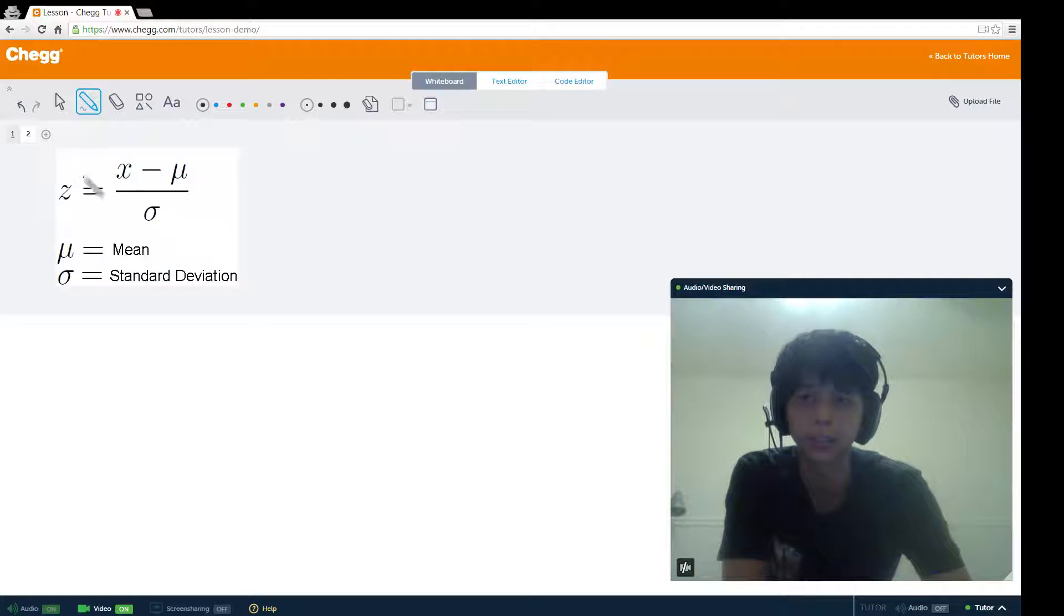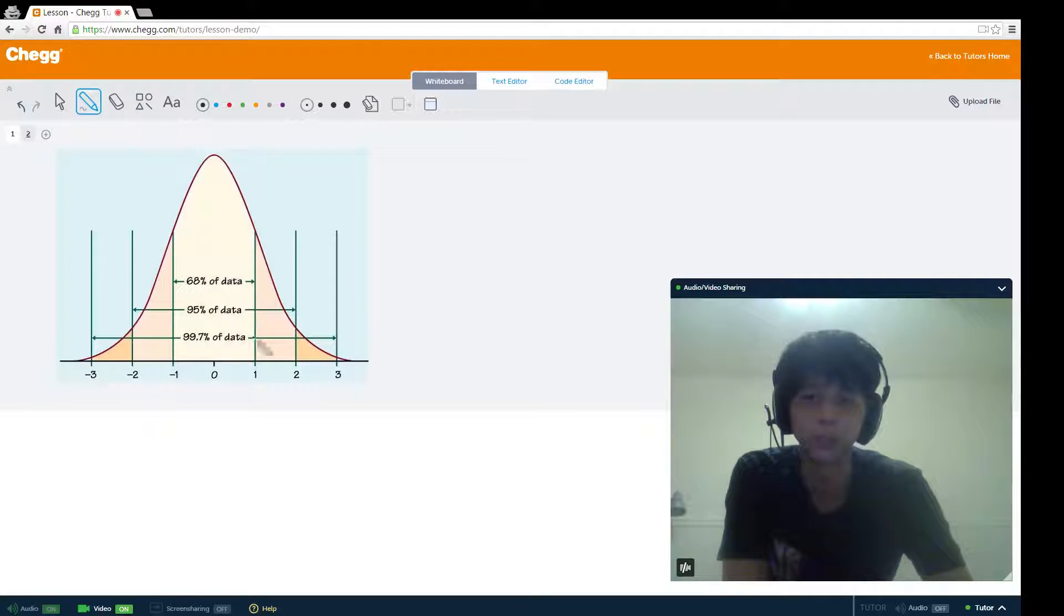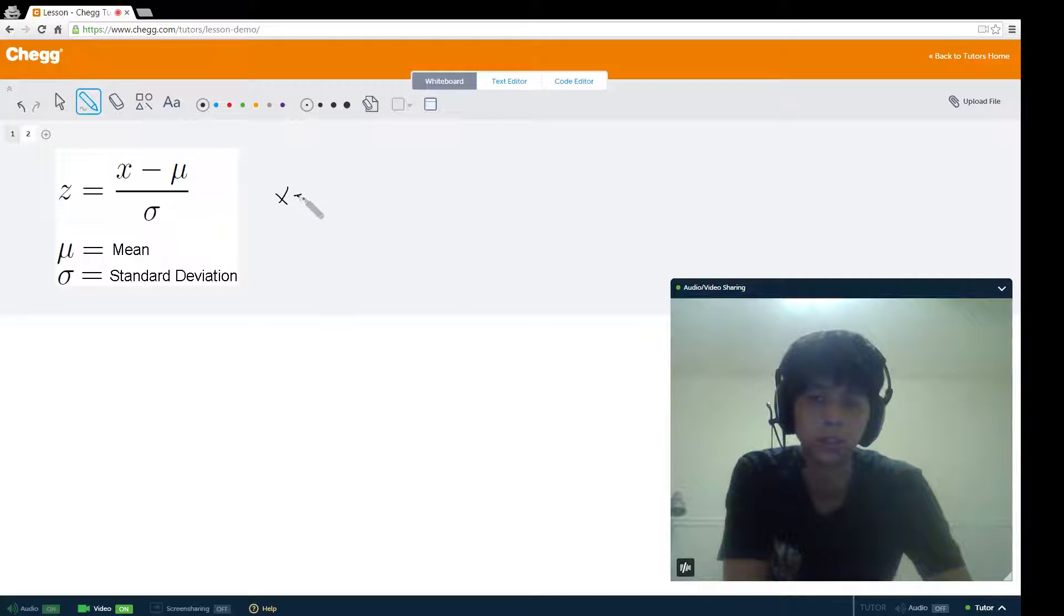If our observation x was, for example, one, and remember that our μ equals zero and our σ equals one, then we can calculate our z-score relatively easily. We just plug it into the formula. The z-score equals one minus zero over one, so it's one.